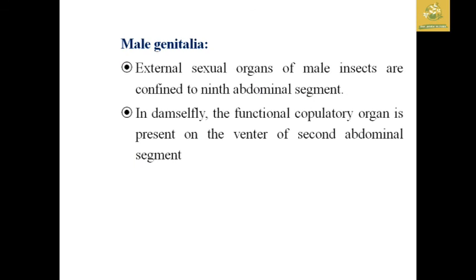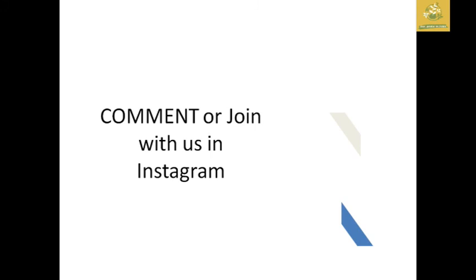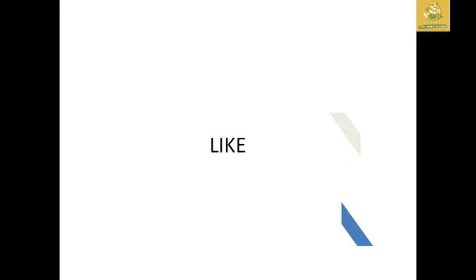In male insects, the sexual organs are confined to the ninth segment. In damselflies, functional copulatory organs are present on the ventral side of the second abdominal segment. Lecture notes are available in the description. If you have any questions, please comment or join us on Instagram. If you like the video, like it, share it with your friends, subscribe to BC Agriculture, and hit the bell for regular updates. Thanks for watching!